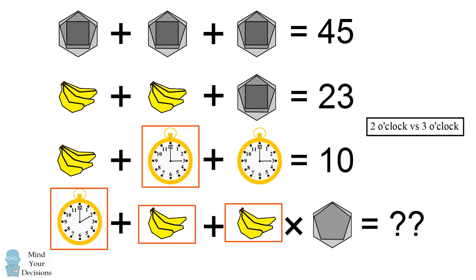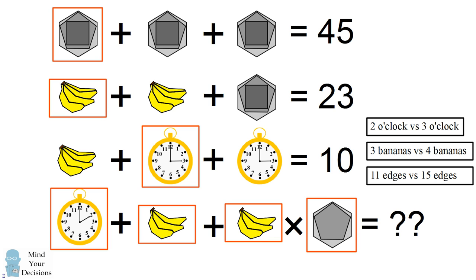Furthermore, the bananas in the final line have bunches of three bananas as compared to the other bunches in the equations, which have four bananas. Finally, the last shape has only 11 edges compared to the other shape in the figures, which has 15 edges.